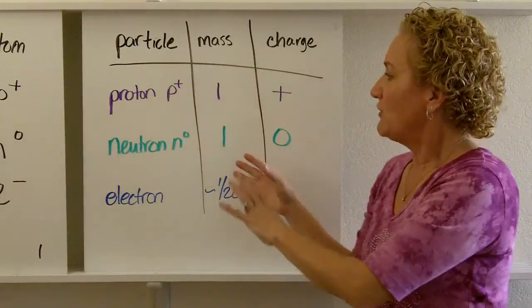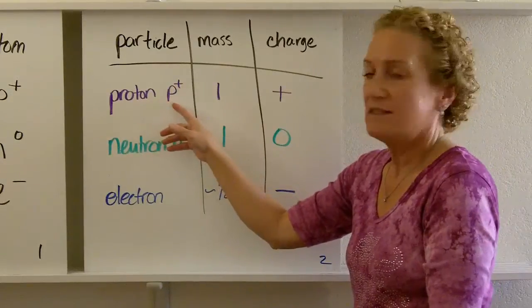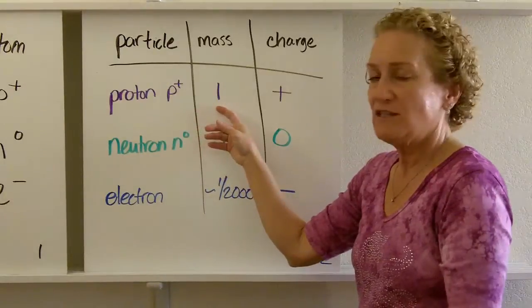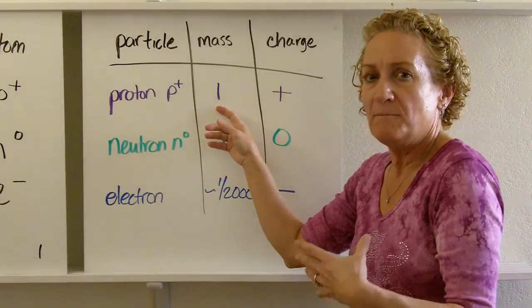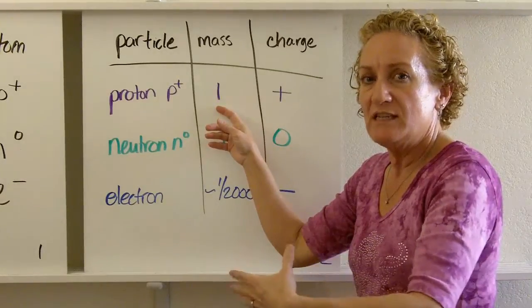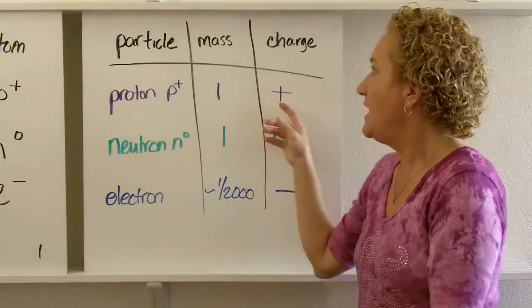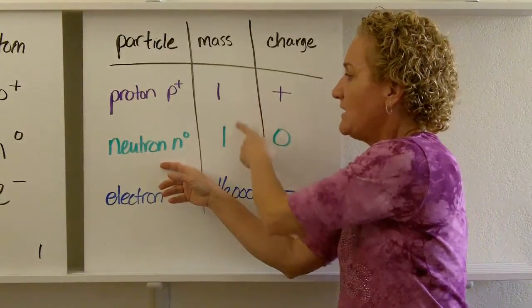So if we want to have a chart that puts everything together, you have the proton. The symbol is P with a little plus sign, superscript. It has a mass of one. One what? Well, let's call it one atomic mass unit. We'll get into details of that later, but just as long as you know that it has a mass of one atomic mass unit and a positive charge.